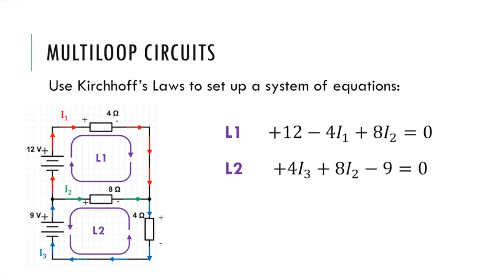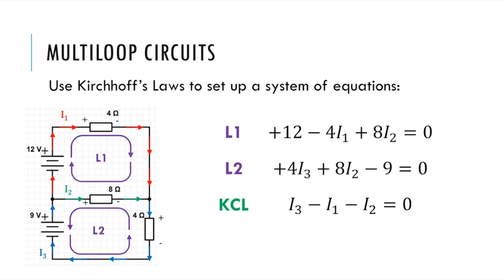Now you might think you're all done with two equations, but we've added I3, so now we have three unknown variables which means we need at least one more equation. From algebra, the rule is you need as many equations as you have unknowns. The third equation is typically where you'll use the current law — that's going to be the easiest one to use. Looking at the junction on the left, current coming in is positive and current going out is negative. I3 goes in so that's positive; I1 and I2 are leaving so they're negative: I3 minus I1 minus I2 equals zero, or equivalently I3 equals I1 plus I2.